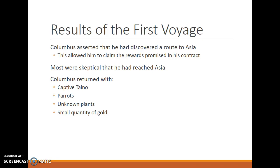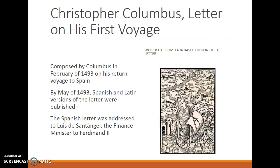Columbus asserted that he had discovered a route to Asia, and referred to the native peoples he encountered as 'Indians' as a result. The rewards promised in his contract were based on discovering a trade route to Asia, so it was imperative that he claim this. Most Europeans were, in fact, very skeptical that Columbus had reached Asia. He returned to Europe with captive Taino, parrots, unknown plants, and a small quantity of gold.